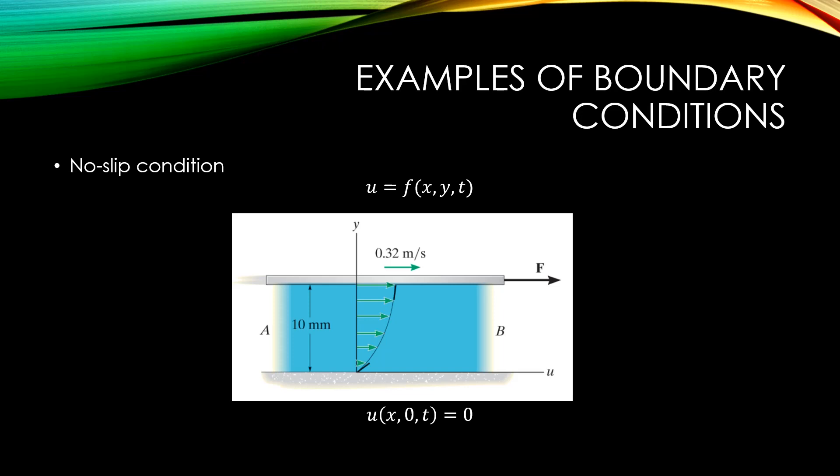Similarly, the velocity of a fluid particle at y equals 10 millimeters should be equal to the velocity of the upper boundary, which is 0.32 meters per second.